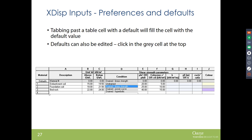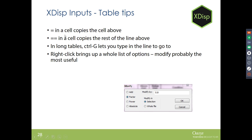Before going into the program, a few useful tips: the grey boxes at the top of tables are default cells — if you tab through from the default K value, for example, it will always apply that value. The equals and equals-equals shortcuts copy cells from the line above, which is very useful for large tables. Long tables can be navigated using Control+G, and right-clicking brings up a list of options including the ability to modify values entered incorrectly by a factor.